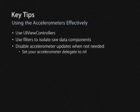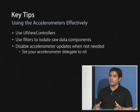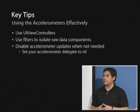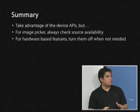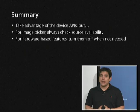Key tips for using accelerometers effectively: use UIViewController for orientation handling — it's built right in. Use filters to isolate your raw data components and get meaningful results. Disable accelerometer updates when you don't need them by setting the delegate to nil. Remember that hardware-based features should be turned off when not needed — which leads perfectly into battery life and power management.